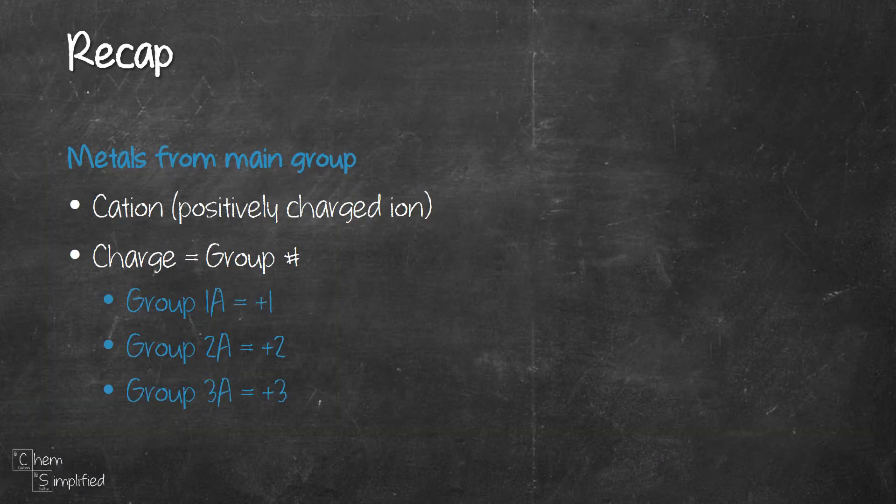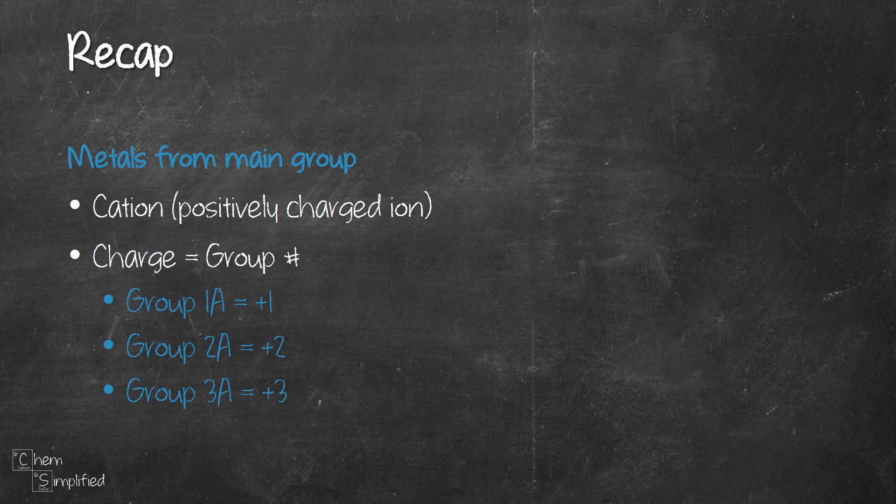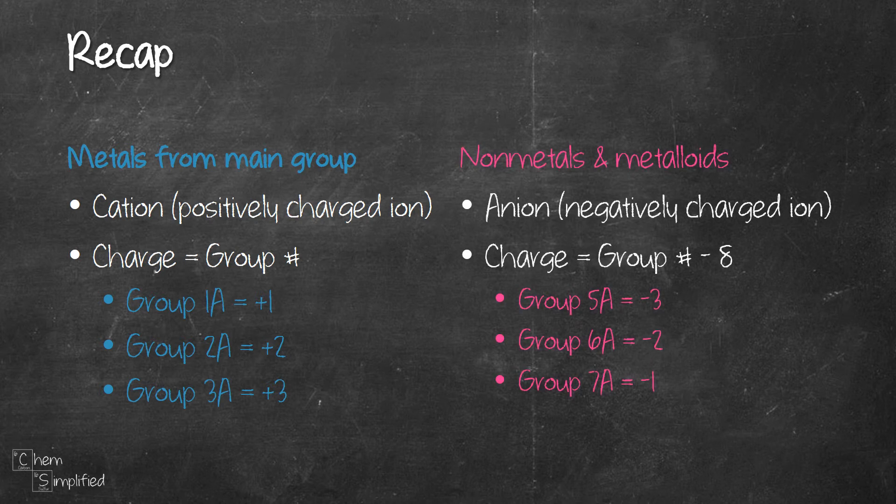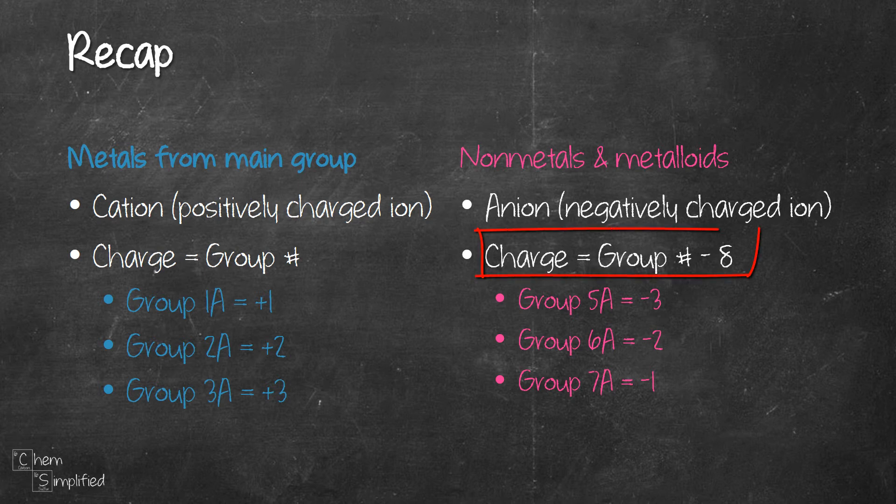To recap, metals donate electrons to form positive ions. The charge of metals from the main group is the same as their group number. Non-metals and metalloids accept electrons to form negative ions. And the charge of non-metals and metalloids is their group number minus 8.